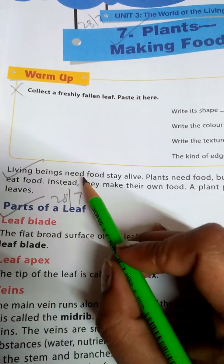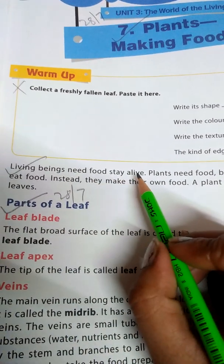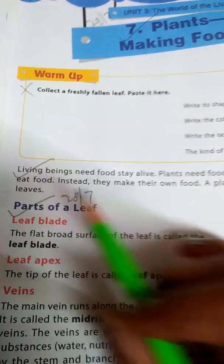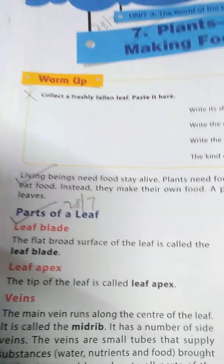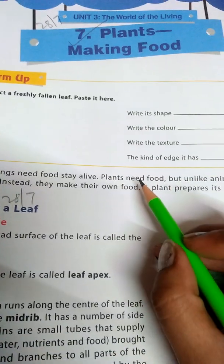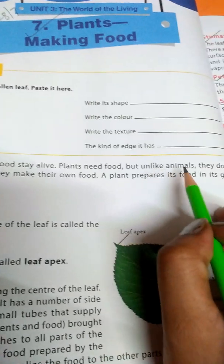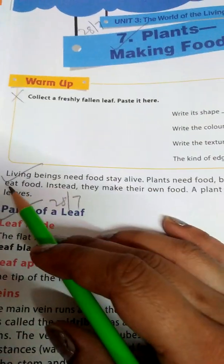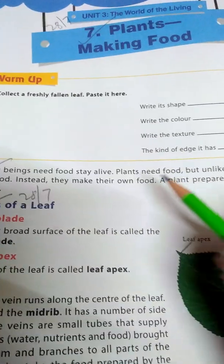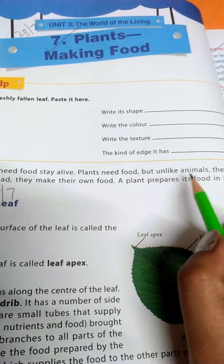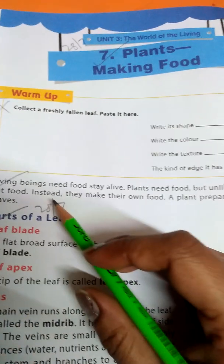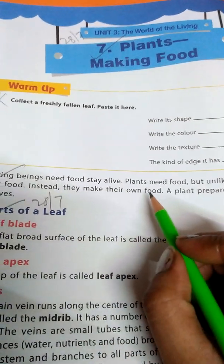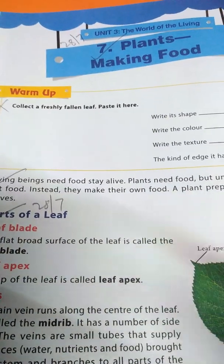Living beings need food to stay alive. We all know very well that we need food to stay alive — we can't live without food. Plants need food too, but unlike animals they do not eat food. Instead, they make their own food.